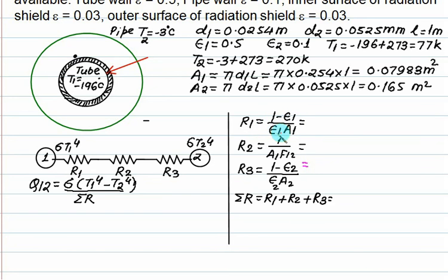R1 is 1 minus epsilon 1 by epsilon 1 A1. Epsilon 1 is 0.5, A1 is 0.07983. R1 comes out to be 12.526. Similarly, we can calculate R2: 1 upon A1 F12. Body number 1 is inside, body number 2 is outside. F12 equals to 1. R2 equals 12.53. R3 equals to 1 minus epsilon 2. Epsilon 2 is 0.1 and A2 is 0.165. R3 is 54.54. Sum all the resistance. Total resistance is 79.26. We will put all this value in the equation Q12 equal to sigma, 5.67 times 10 to the power minus 8, T1 equals to 77 Kelvin and T2 equals to 270 Kelvin. We are expecting negative answer from here. This one is the heat transfer without shield.